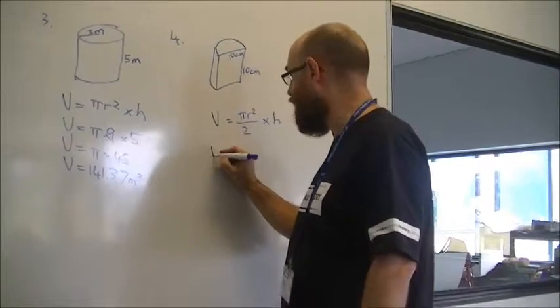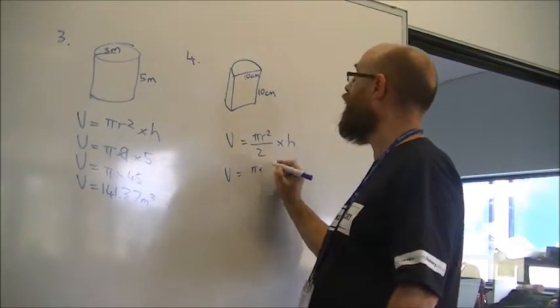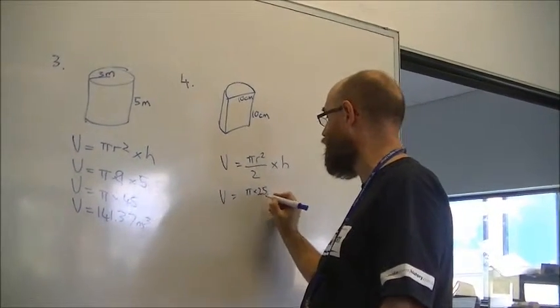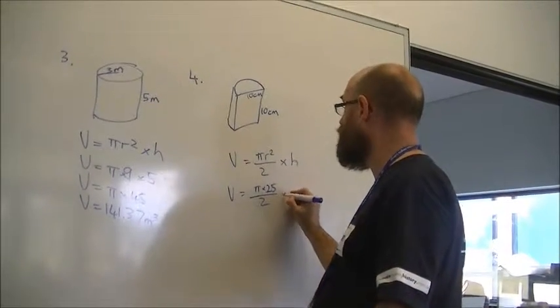So, V equals pi times, now r is 5, so it's pi times 25 divided by 2 times 10.